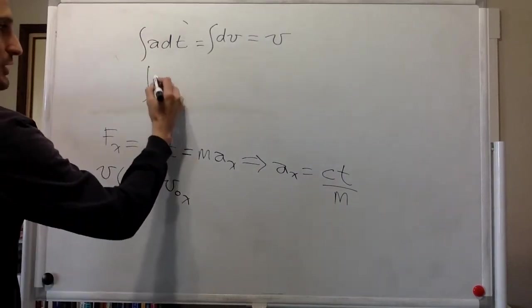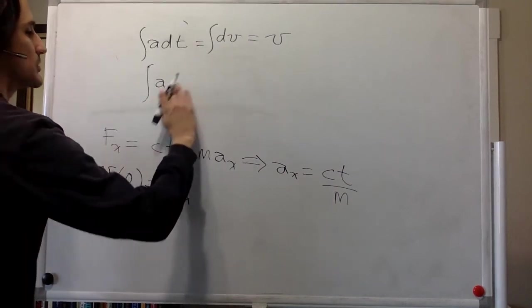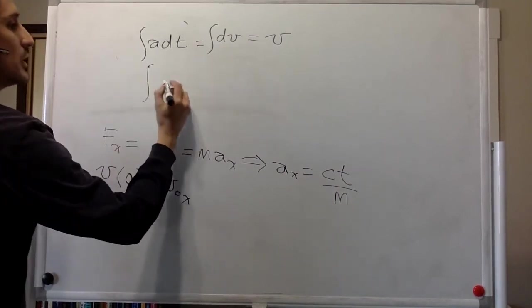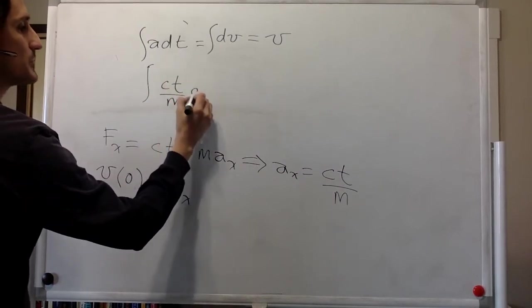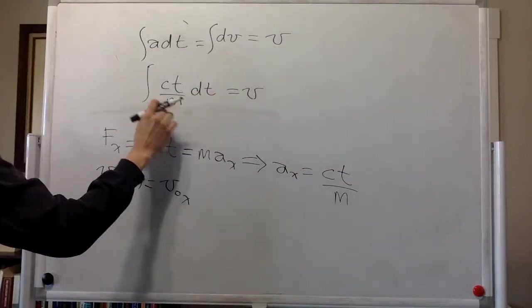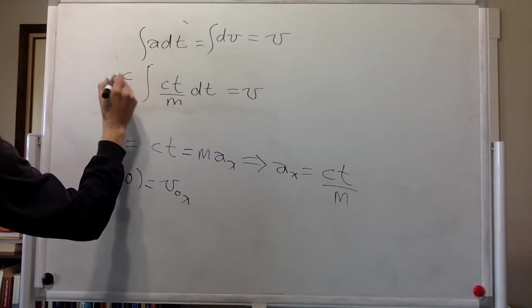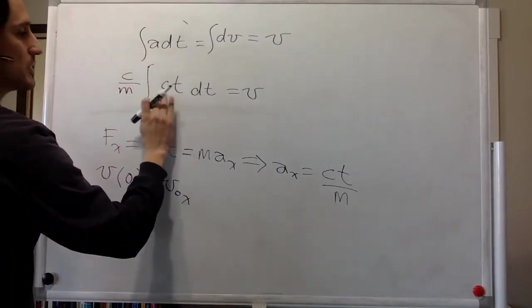So we can put it over here. It's t dt divided by m. That is equal to dv. So c and m are constants. They don't change with time. So we can take them out of the integral.